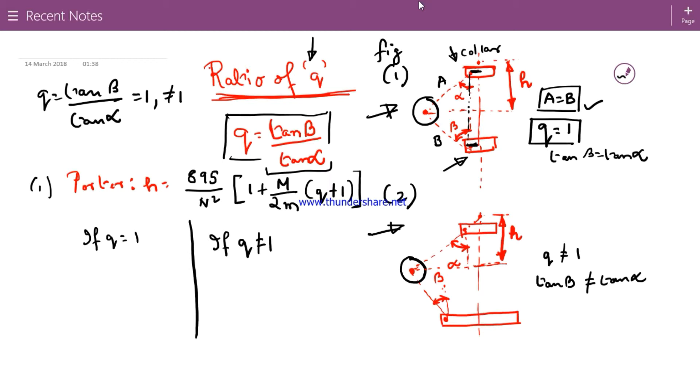This offset distance should also match. What will happen then? These two angles, alpha and beta will be equal, hence tan beta and tan alpha will be equal. So your Q, tan beta by tan alpha will be equal to 1.